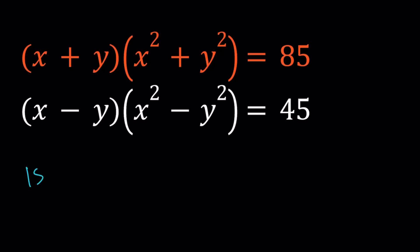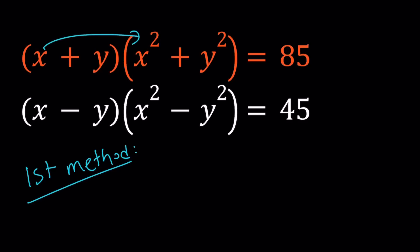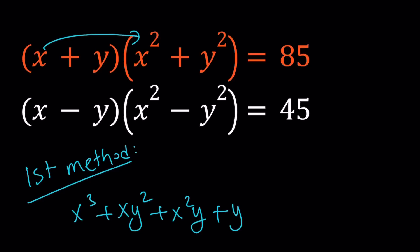Here's my first method. I would like to expand everything so I can clearly see what's going on. When you expand, it's going to be nicely surprising. Distributing, you get x cubed plus xy squared plus x squared y plus y cubed, and that equals 85.